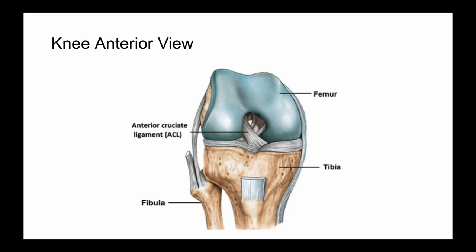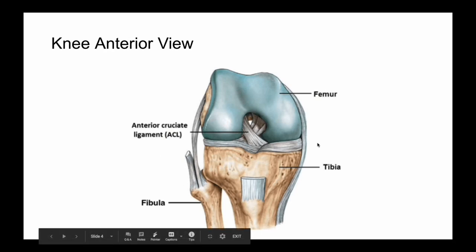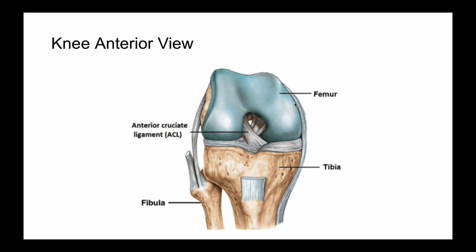Beginning with the anterior view of the knee, we're going to cover the general structures that comprise the knee joint, starting with the bony anatomy. Just to orient ourselves, we have the superior, inferior, lateral, and medial aspects. We know this is the lateral aspect due to the presence of the fibula. Notable early on is the articular cartilage, highlighted in blue, over the lateral and medial femoral condyles. This cartilage is affixed to the femur and allows for smooth motion as the femoral condyles articulate over the lateral and medial menisci.